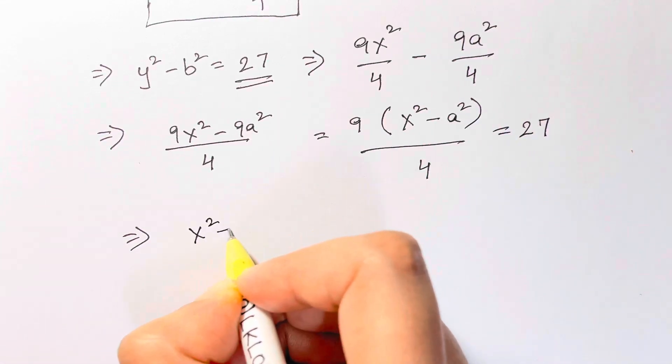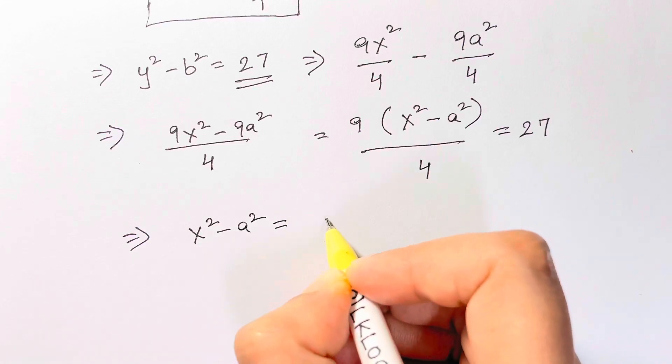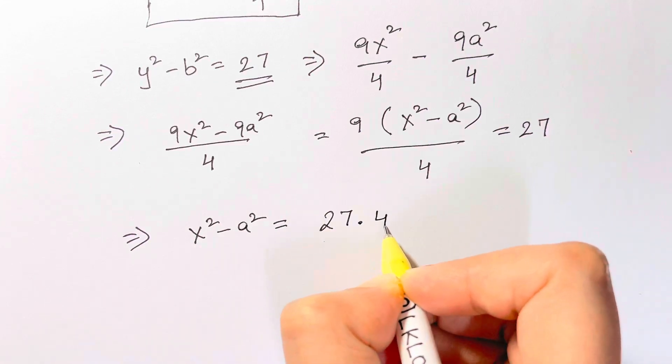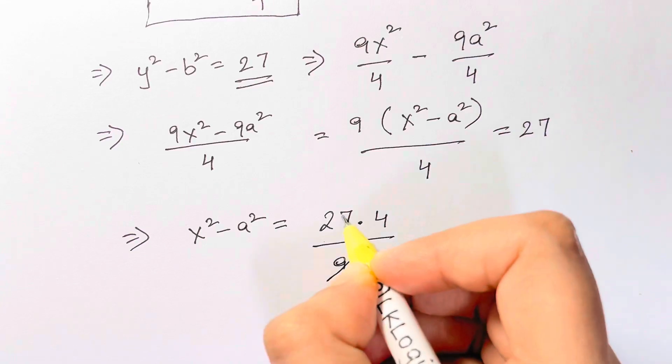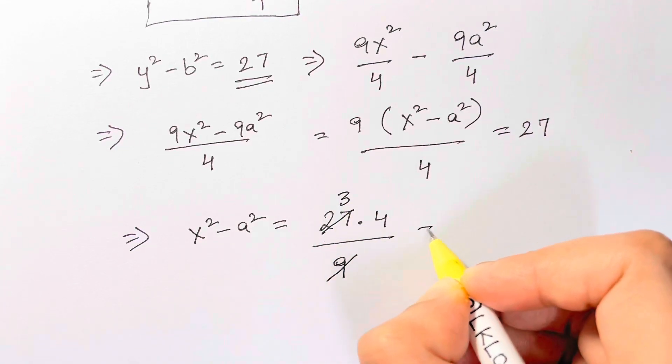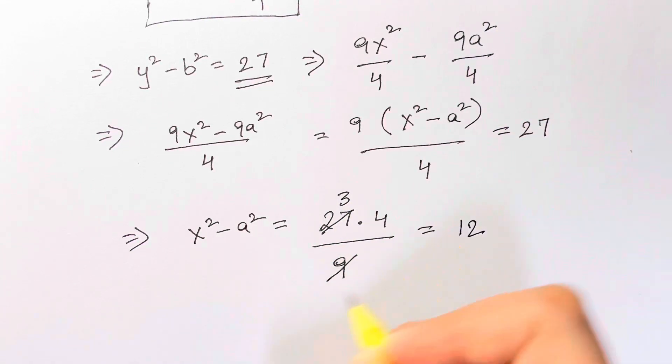x square minus a square is equal to 27 times four divided by nine. Nine times three is 27, three times four is 12. So we got the value of x square minus a square is equal to 12.